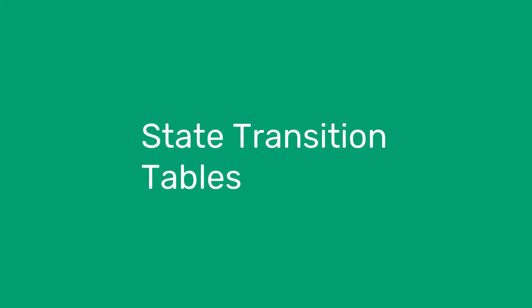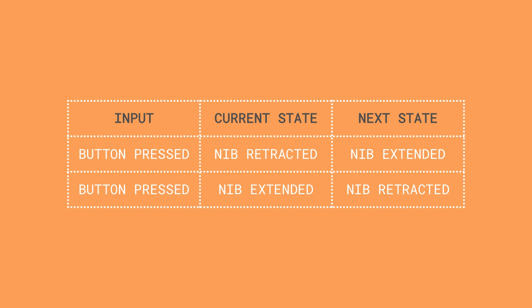Let's now look at our second and final way of representing finite state machines, which is with state transition tables. These are like the truth tables you find in logic, and show the effect different inputs have on the current state. Here's the one for the pen example. You can see our three columns, which are input, current state, and next state. At A level, we also might add an output column if it were applicable. By current state, we mean the state the machine's in before you add the input, and the next state is the one the machine transitions to because of the input.